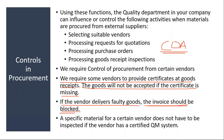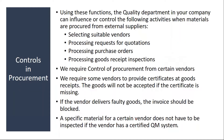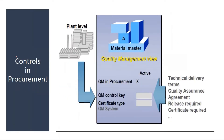If you need these kinds of controls, you need to configure controls in procurement. Also, a specific material from a certified QM vendor doesn't have to be inspected. To have these controls, in the material master under the Quality Management view, you need to activate the 'QM in Procurement' checkbox.